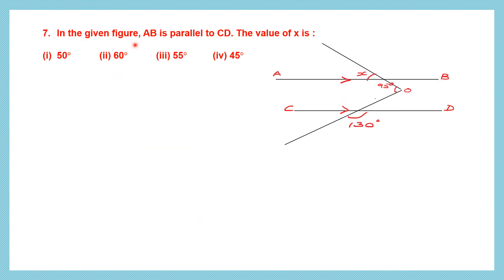Question 7. In the given figure, AB is parallel to CD. We have to find the value of angle X. Now angle X is on a line that, if extended to CD, could be a transversal — but it is not. Similarly, the other line is not cutting AB, so we can't take that as a transversal either. So now, what do we do?